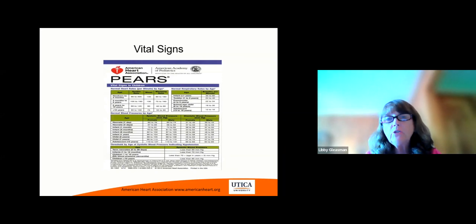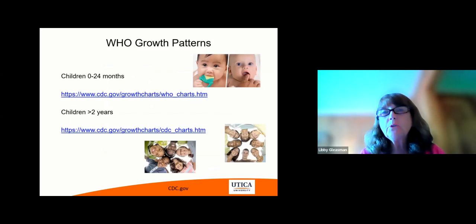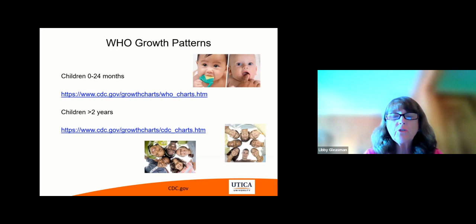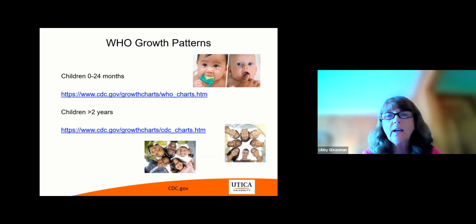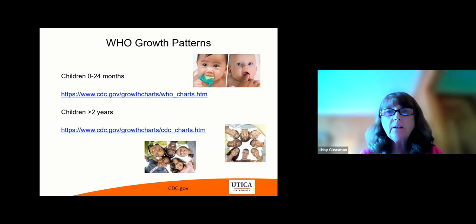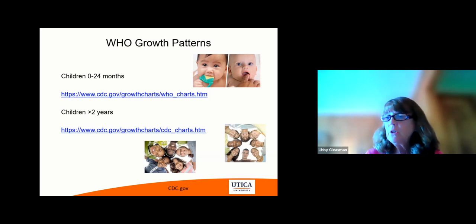So this is a vital sign guideline by age distribution, put out by the American Heart Association. The World Health Organization, or WHO, has put together some growth patterns. You can click on these charts, and there are PDFs that will take you to sites where you can look at the growth charts. Most electronic charting has the growth charts within it, so it's easy to click on and see the pattern — usually a graph showing whether the child is staying on a certain percentile. If they start out at a lower percentage and stay on that percentile, that's not a bad thing. If they drop off, that is something you need to address and be aware of.